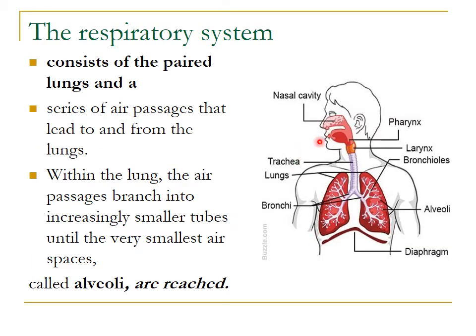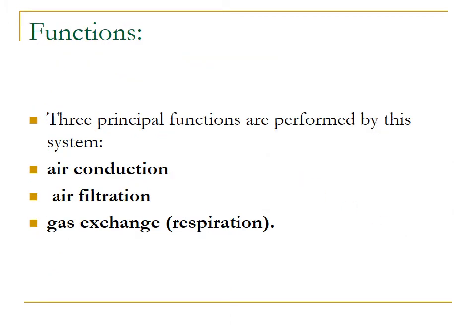The respiratory system consists of a pair of lungs and a series of air passages that pass to and from the lungs. Within the lungs, the air passages branch into smaller units or tubes until the very smallest air spaces — the alveoli — are reached. The three principal functions are: to conduct air from outside to the respiratory unit, to filter inspired air, and to exchange gases — oxygen is transferred to the tissues and carbon dioxide is taken up from the tissue at the level of the alveoli.